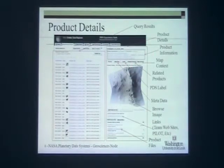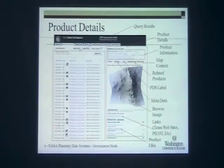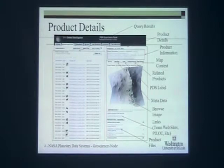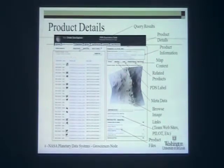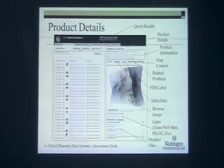You can look at related products — the source products that were used to generate this product, or products that were taken at the same time through some sort of coordinated observation. Finally, you can look at match topics and various documentation associated with the archive or elsewhere. We also provide links — ODE does not exist in a vacuum. Many of these data products can be found at multiple sites and through multiple tools. For example, for CRISM data, you can go to the CRISM site and pull up the data there. We provide a link to the PILOT database and website so you can look at the PILOT observation footprint. Finally, you can look at the actual product file, giving you a way to really dig through the product before you download it.